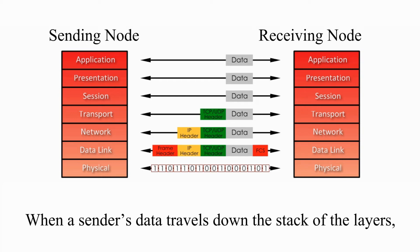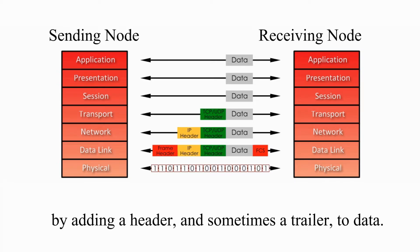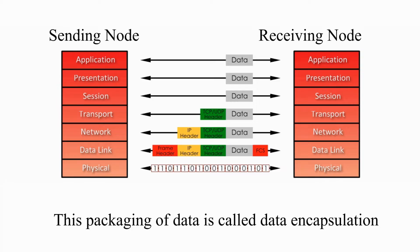When a seamless data travels down the stack of the layers, each layer of the OSI model encapsulates data by adding a header and sometimes a trailer to data. This packaging of data is called data encapsulation.